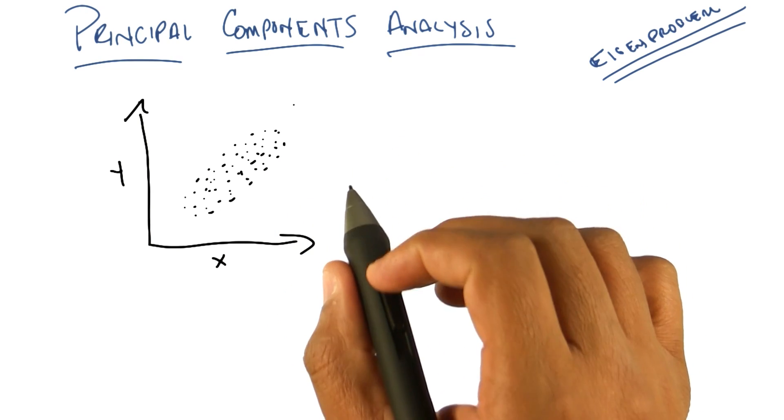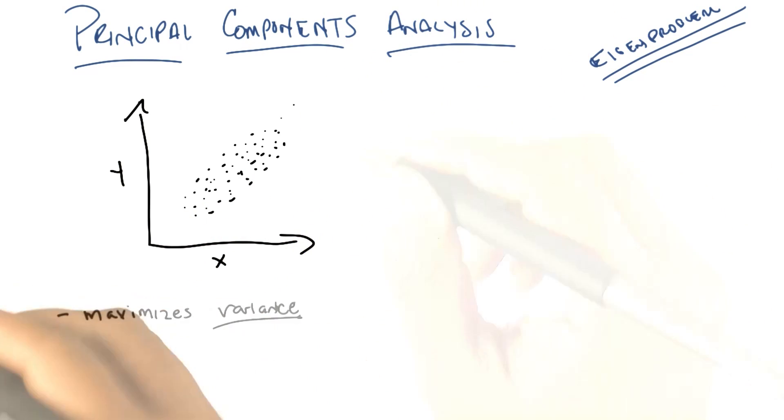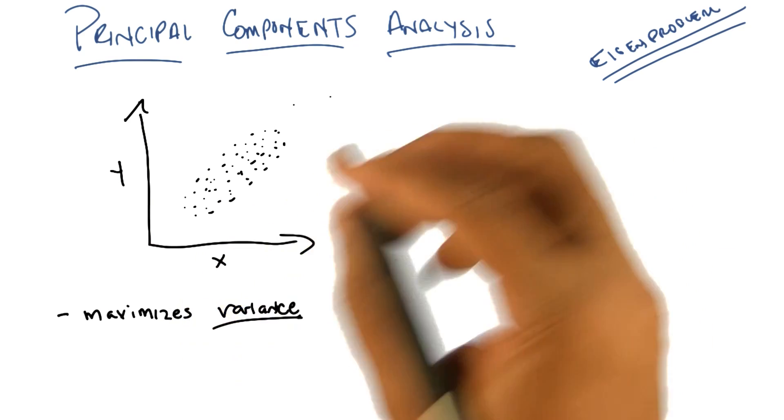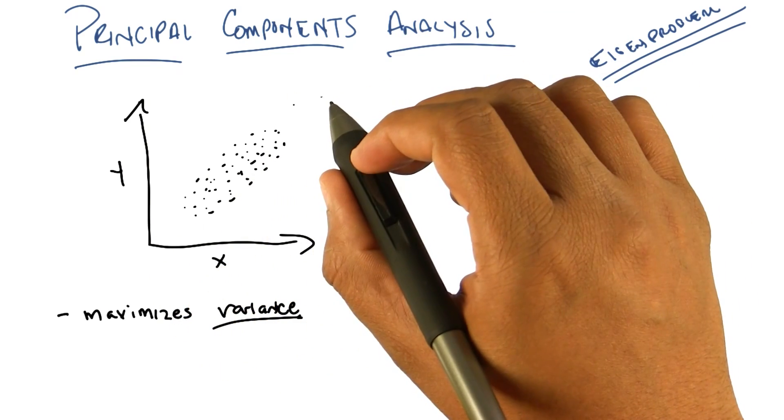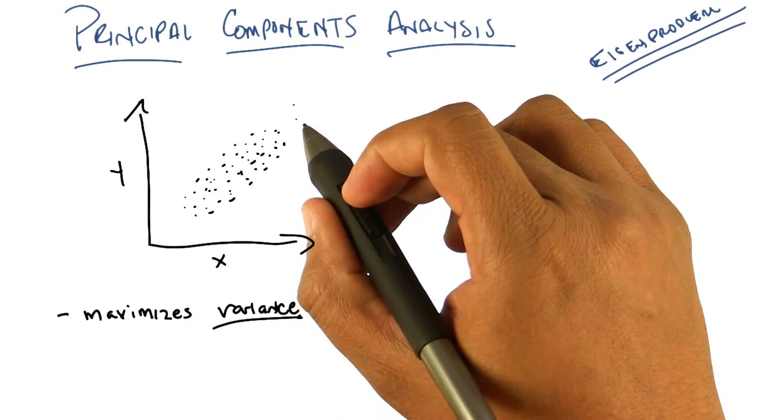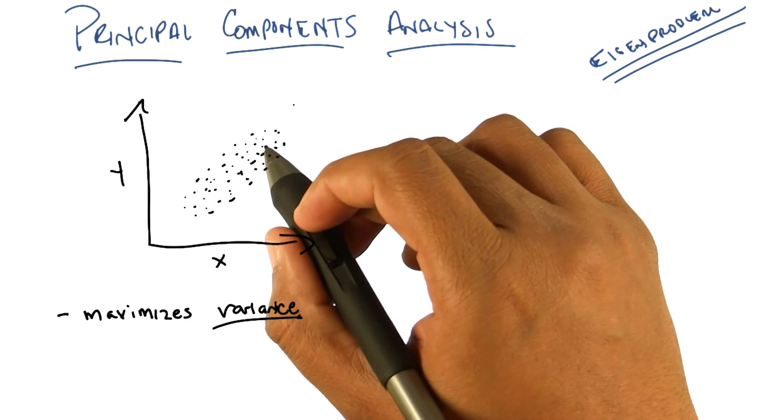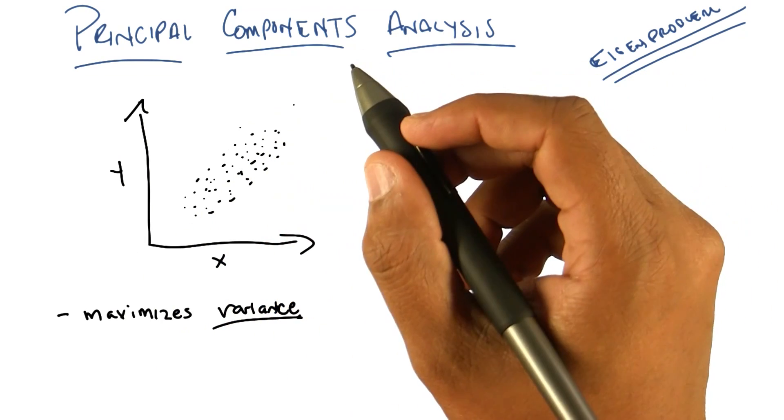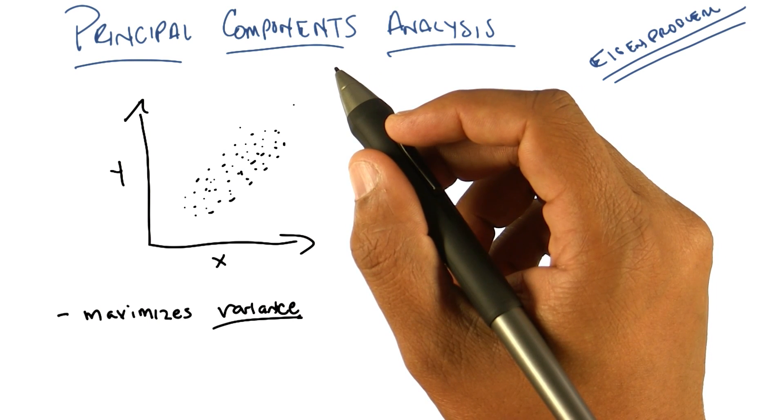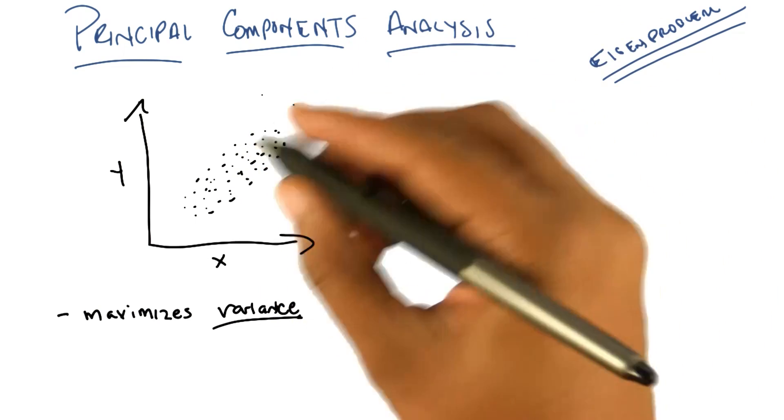What principal components analysis does is it finds directions of maximal variance. Does that make sense? Variance of what? The variance of the data. So if I had to pick a single direction here, such that if I projected it onto that dimension, onto that direction, onto that vector, and then I computed the variance, like literally the variance of the points that were projected on there, which direction would be maximal? I would think it would be the one that is sort of diagonal. It kind of blobs along that particular direction. Right. That's exactly right.